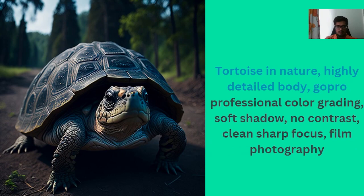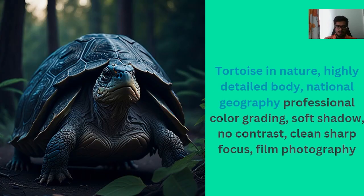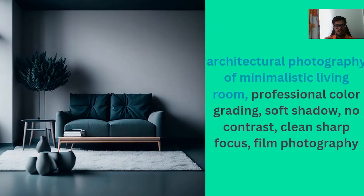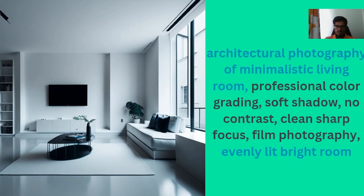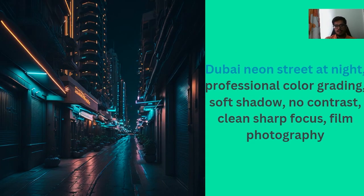Changing to GoPro photography brings in a closer, more focused perspective on the subject. Now let's try architectural photography of a minimalistic living room, keeping the rest of the prompt the same — professional color grading, soft shadow, no contrast, clean sharp focus. This is the first generation. Manipulating the last part to 'HDR bright room' makes the room noticeably brighter. Going further with 'evenly lit room' gives an even brighter, well-lit result for the minimalistic living room.